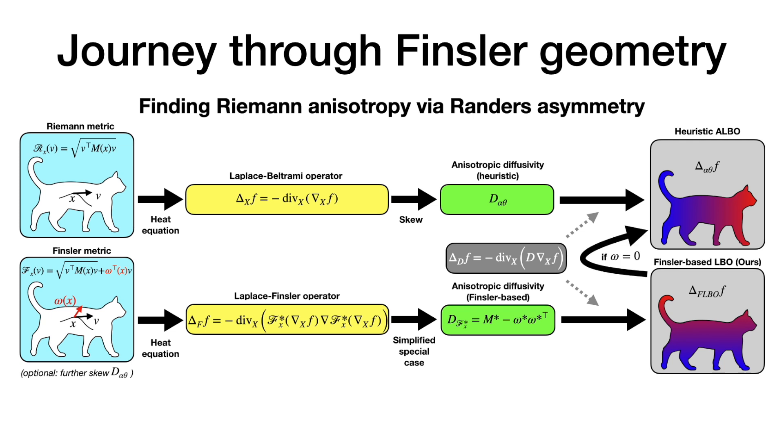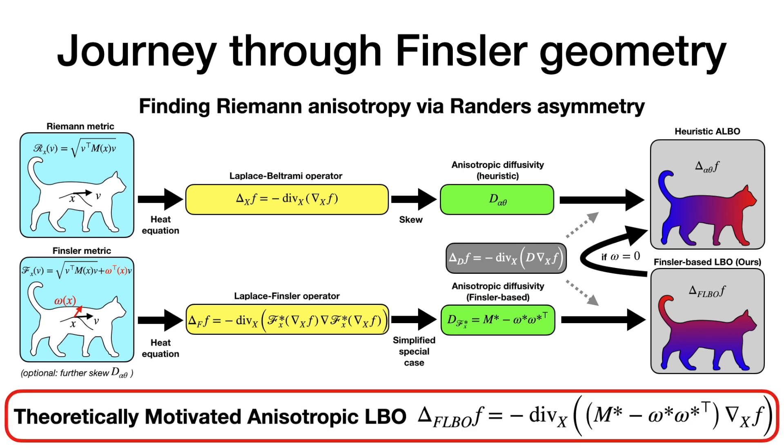In particular, we recover exactly the same formula when we remove the drift component omega. The outcome of our theoretical exploration is the introduction of a new theoretically motivated anisotropic LBO called the FLBO.